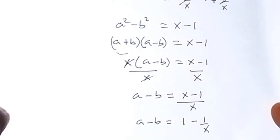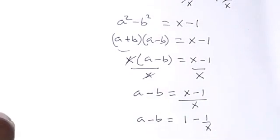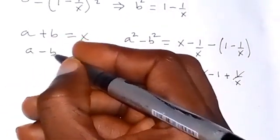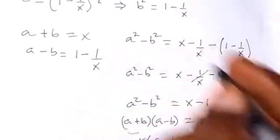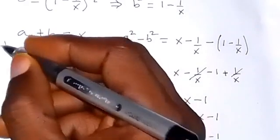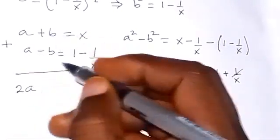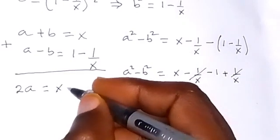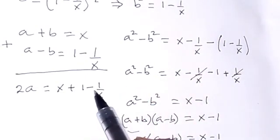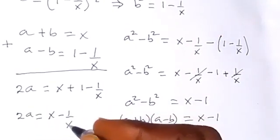So we can bring this equation alongside the first one. We have A plus B equals x, and now A minus B equals 1 minus 1/x. Let's solve simultaneously by adding the two equations so as to eliminate B. This gives us 2A equals x plus 1 minus 1/x.